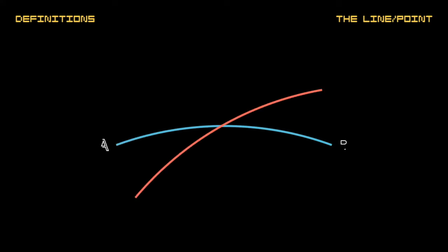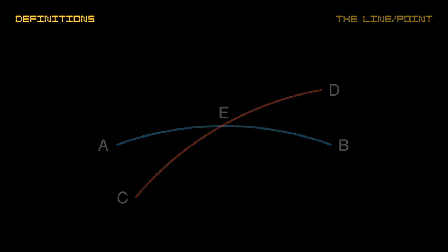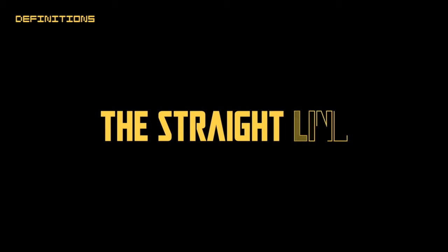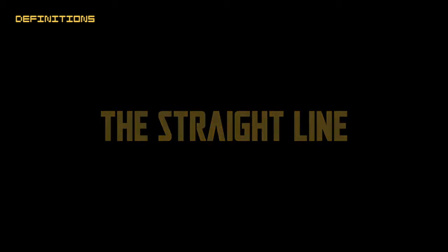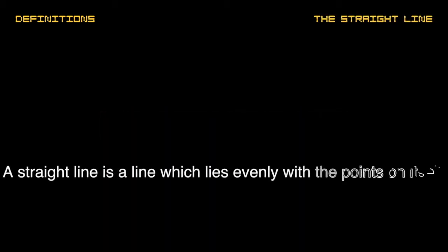From now on there will be many cases of marking dots with alphabets like this. A straight line is a line that lies evenly with the points on itself.